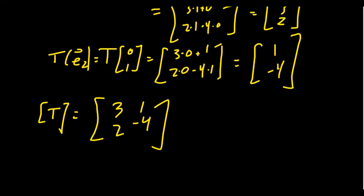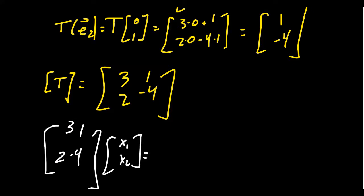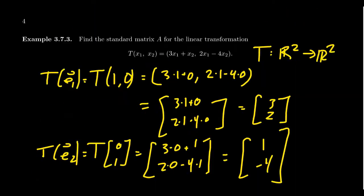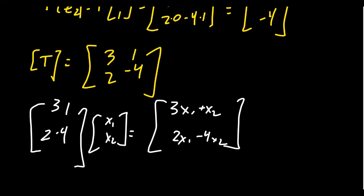Let's verify: multiplying the matrix [[3,1],[2,-4]] by a generic vector (x1, x2) gives 3x1 + x2 and 2x1 - 4x2 — the exact same formula as before. Also, when you write the formula with variables lined up, x1 first and x2 second, you can actually see the matrix representation directly inside the formula: the coefficients form the columns of the matrix.